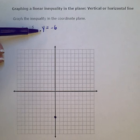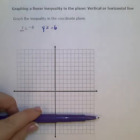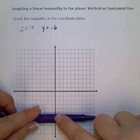y equals negative 6 is a horizontal line, crossing the y-axis at negative 6.